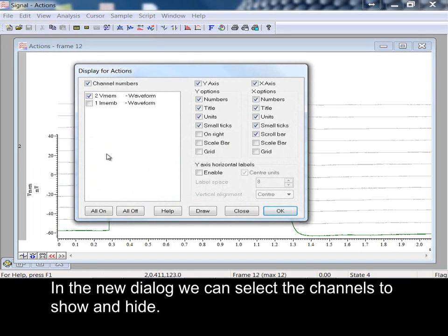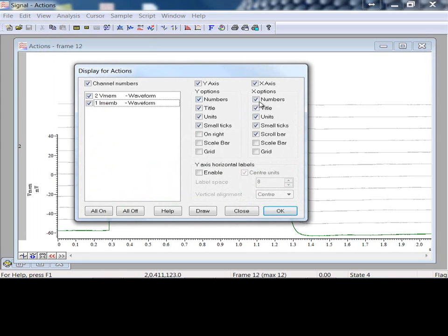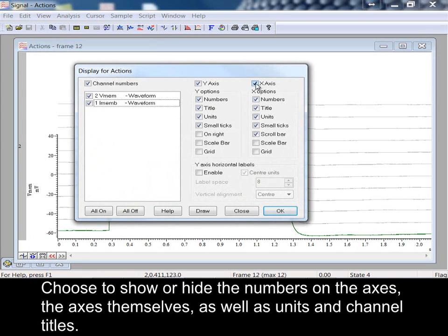In the dialog, we can select the channels to show and hide. Choose to show or hide the numbers on the axes, the axes themselves, as well as units and channel titles.